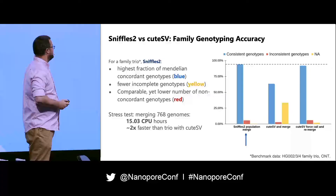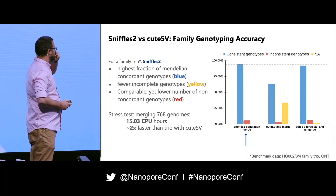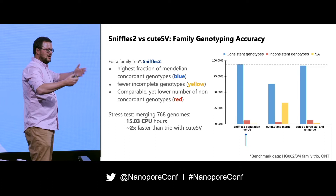Overall this looks pretty promising. We also tried merging 768 genomes - basically the trio set replicated many times. If you merge that many genomes, it just takes 15 hours, which is around two times faster than merging a trio with the original approach.